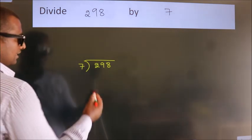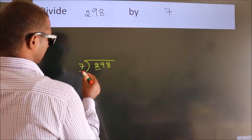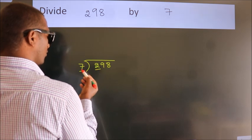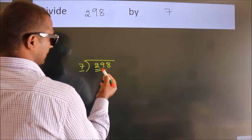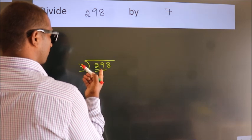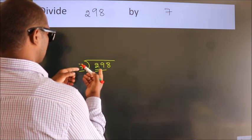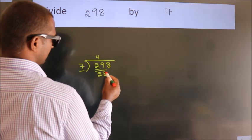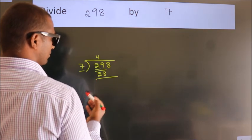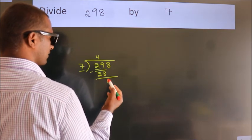Next, here we have 2, here 7. 2 is smaller than 7, so we should take 2 numbers, 29. A number close to 29 in the 7 table is 7 fours, 28. Now we should subtract. We get 1.